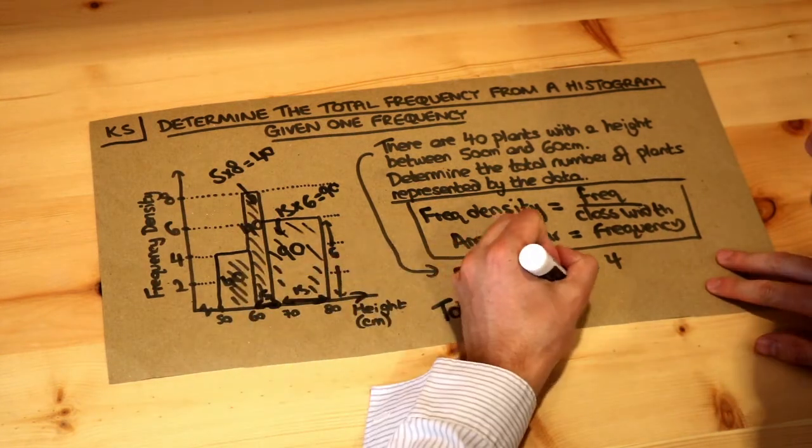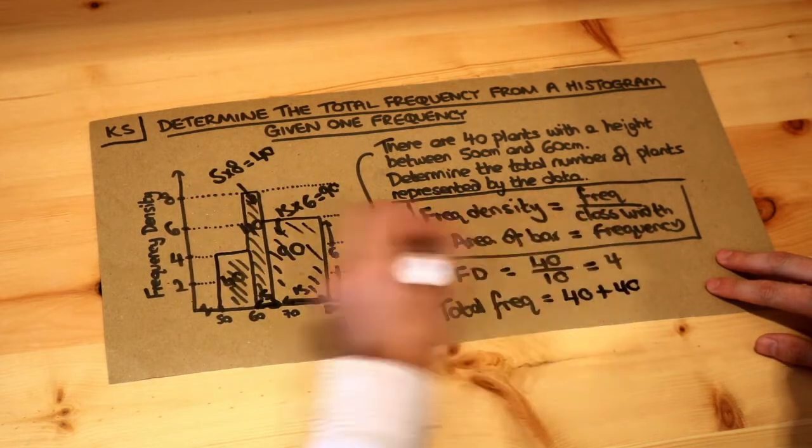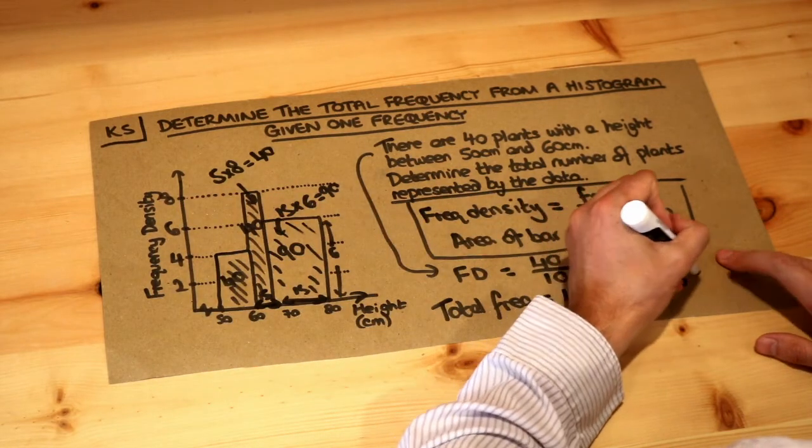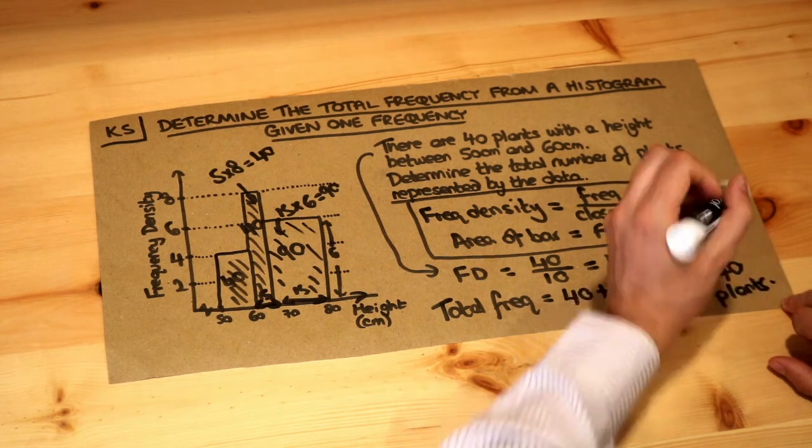And if we add those together, we've got 40 plus another 40 here, plus 90 plants here, that represents 170 plants in total.